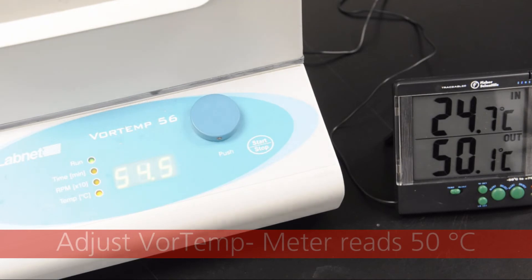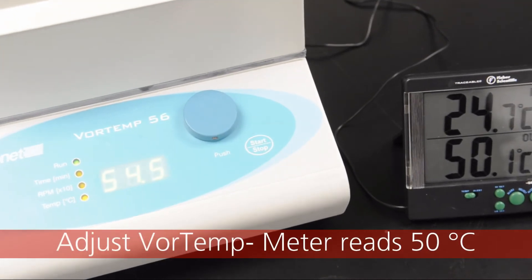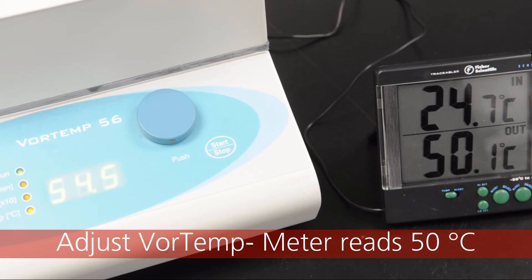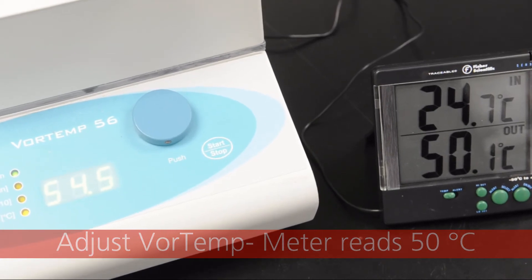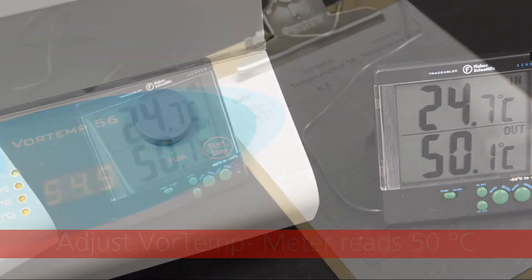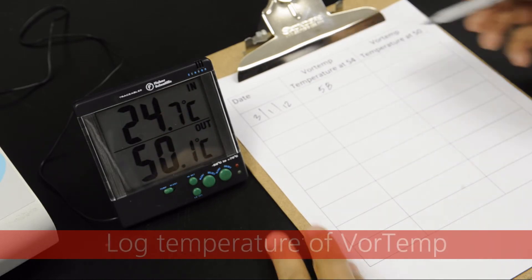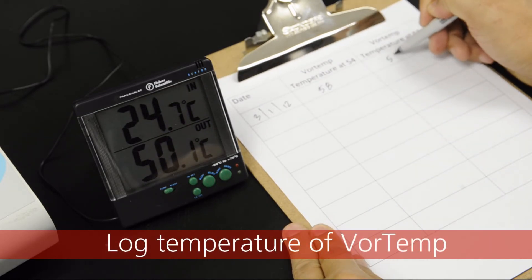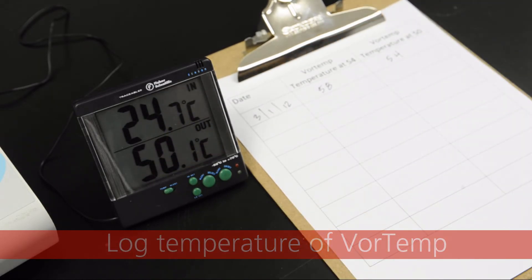Next, adjust the temperature of the Vortemp so that the out display of the digital temperature meter has reached 50 degrees and the reading is stable. Again, log the temperature displayed on the Vortemp and on the digital temperature meter.